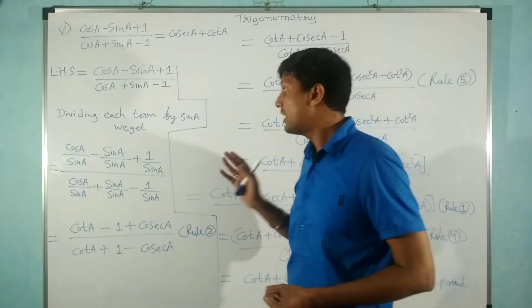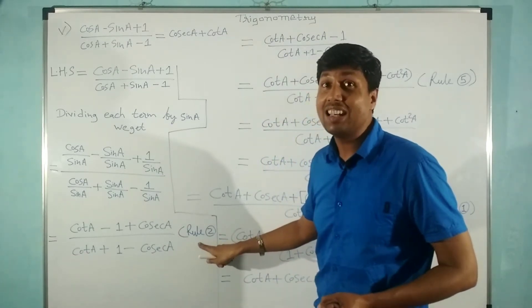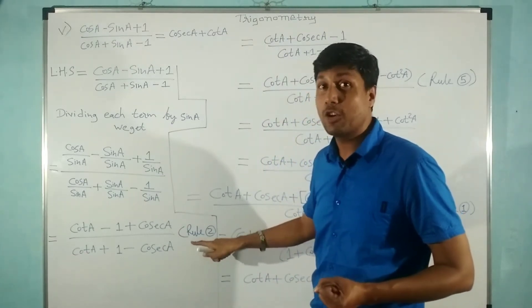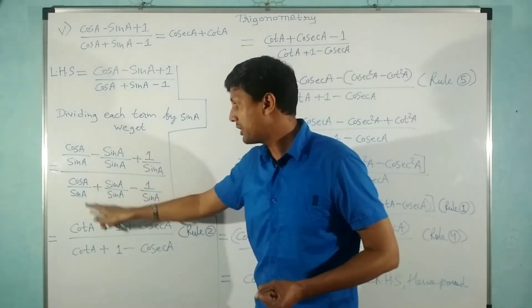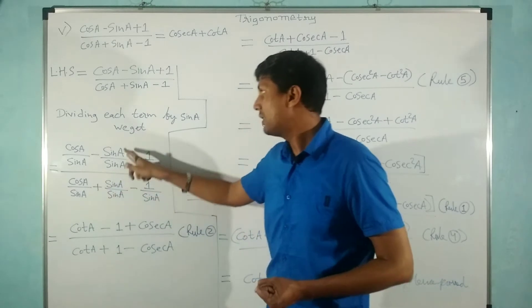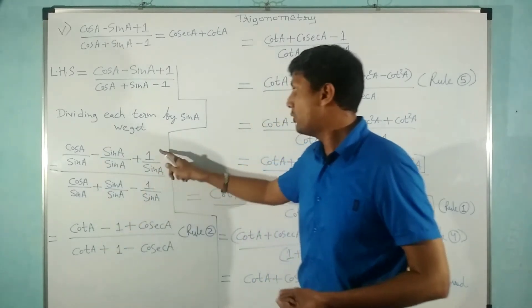Then what I did, I applied the trigonometric identities—that is rule number two. Cos A upon sin A will be cot A, sin A upon sin A will be one, and one upon sin A will be cosec A, with the respective signs as is.